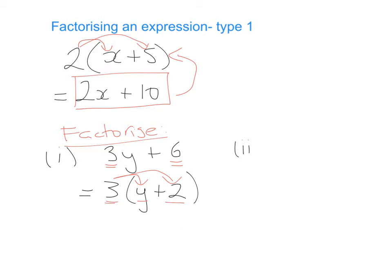Let's try another one. If we had 5a + 15b, again we look at what they have in common. What is the highest common factor between 5 and 15? Hopefully we know the highest number that divides into both is 5. The two letters are different so they're not in common.